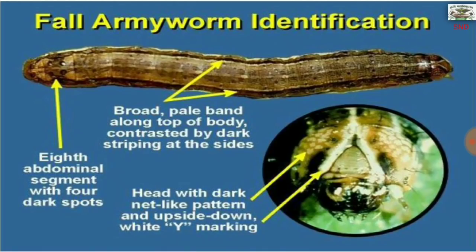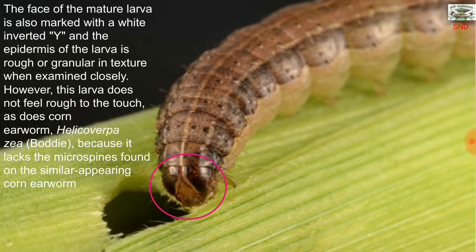Identification of fall army worm can be done by observing the head, which has a dark net-like pattern and an upside-down white Y marking. The body has a broad pale band along the top contrasted by dark striping at the sides. The 8th abdominal segment has 4 dark spots. The face of the mature larva is marked with an inverted Y, and the epidermis of the larvae is rough or granular in texture when examined closely. However, this larva does not feel rough to the touch as does the corn earworm, Helicoverpa zea, because it lacks the micro-spines found on the corn earworm.